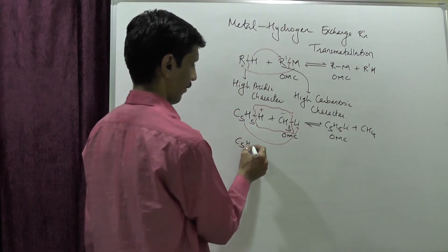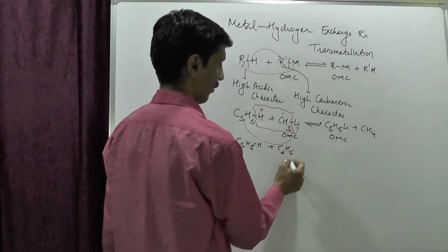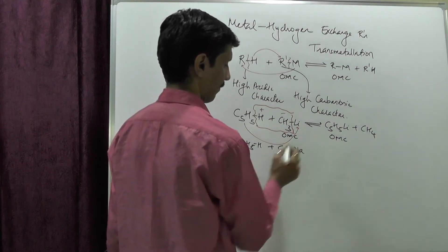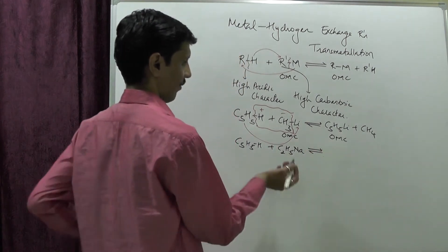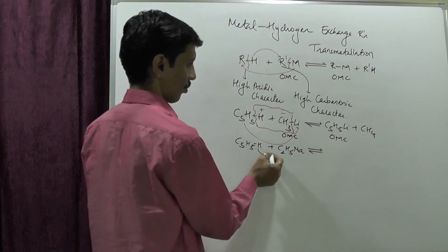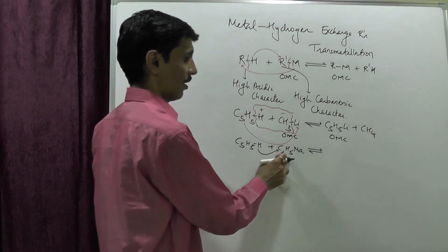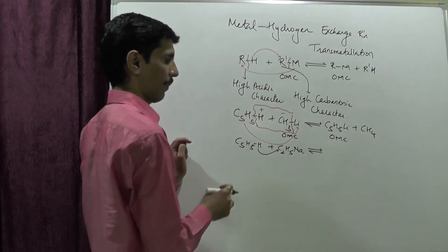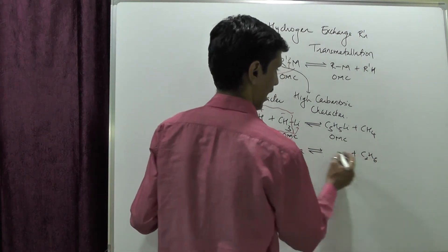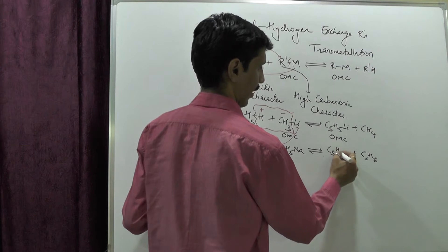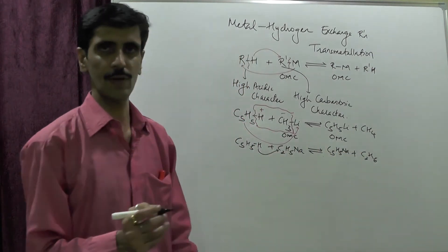Some more examples. C5H5H being treated with C2H5Na. The H goes towards the carbon of the ethyl group, which acts as a carbanion. As a result we get C2H6, and we are left with C5H5Na, which is an organometallic compound.